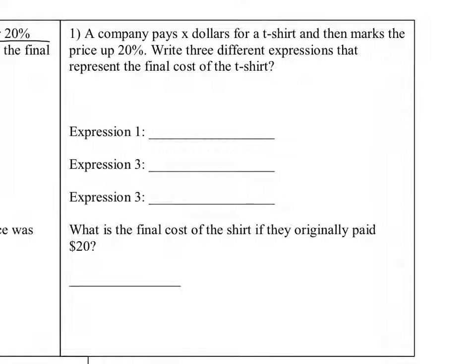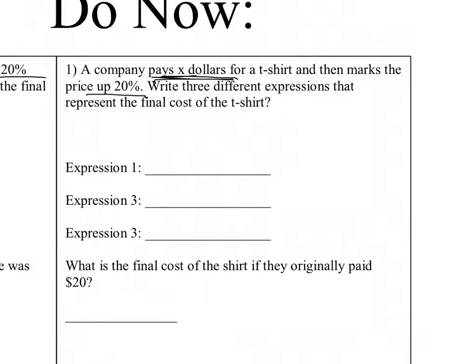Looking over here, a company pays x dollars for a t-shirt and marks up the price 20%. So originally we're looking at x dollars — that's how much they pay for it — and then they're adding 20% of the price. If we factor this out, this gives us x times (1 plus 0.2), which is x times 1.2, or 1.2x.